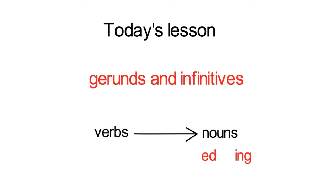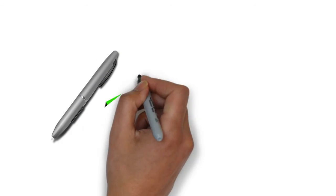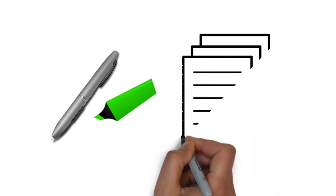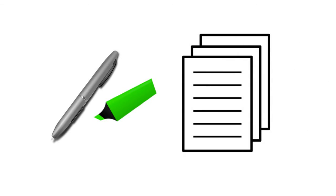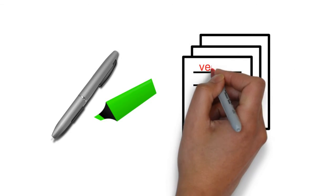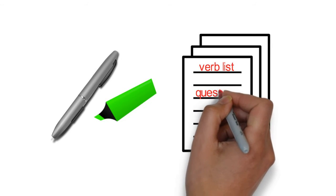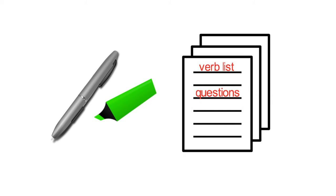While watching today's video, you will need a pen, a highlighter, and your note-taking sheet with the list of verbs that can be followed by an infinitive or a gerund. Remember to write down any questions to ask your teacher.